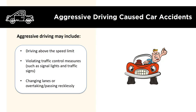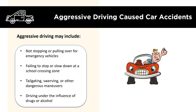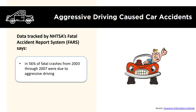Aggressive driving-caused car accidents: aggressive driving may include driving above the speed limit, violating traffic control measures such as signal lights and traffic signs, changing lanes or passing recklessly, not stopping for emergency vehicles, failing to stop at a school crossing zone, tailgating, swerving, or other dangerous maneuvers, and driving under the influence. Data tracked by the NHTSA's Fatal Accident Report System (FARS) says 56% of fatal crashes from 2003 through 2007 were due to aggressive driving.